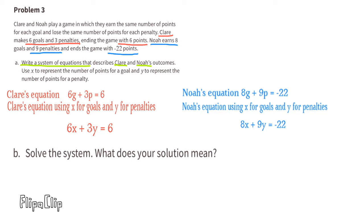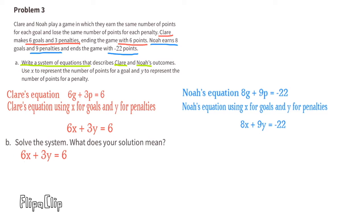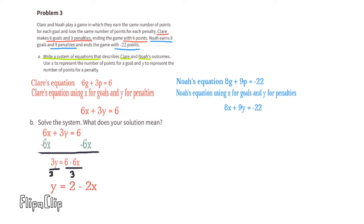B. Solve the system. What does your solution mean? We can start with Claire's equation. Let's subtract 6X from both sides. Divide both sides of the equal sign by 3. Now that we know that Y equals 2 minus 2X, we can substitute the Y with a 2 minus 2X in Noah's equation. Now his equation reads 8X plus 9 times 2 minus 2X equals negative 22. Use the distributive property to multiply 9 times 2 and 9 times negative 2X. Combine like terms.